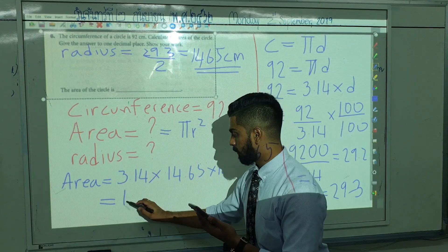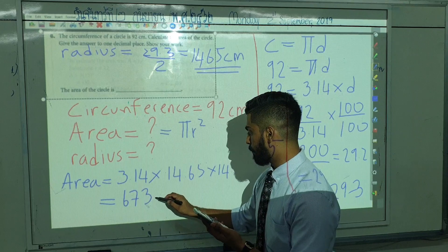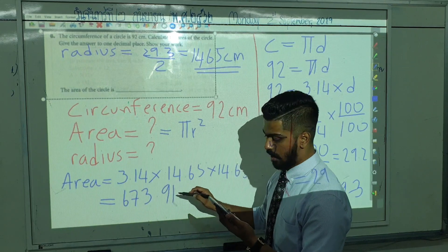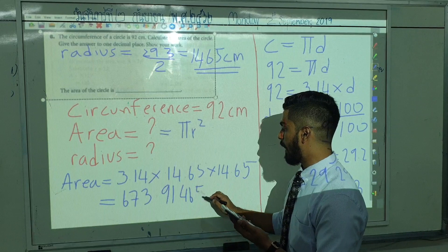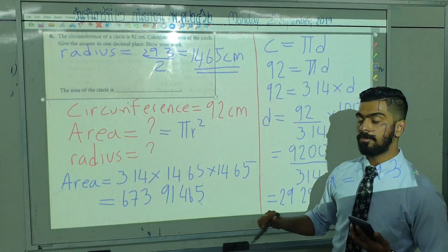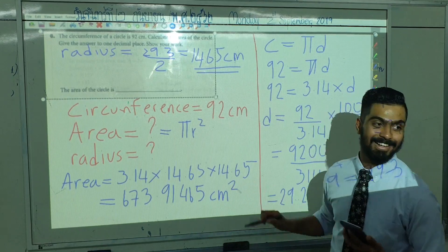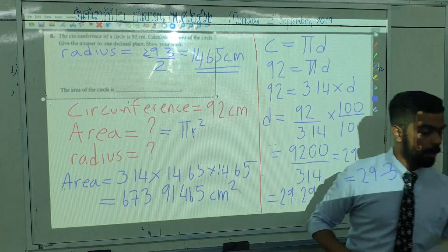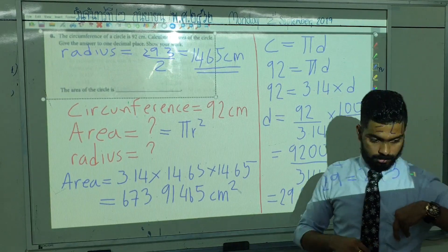The result is approximately 673.91 cm squared — the unit is cm squared, very good. Please copy all of this into your notebooks.